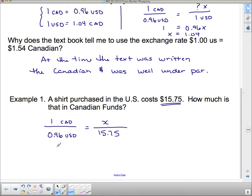And now, we cross multiply. So, 0.96 times X, 0.96X is going to equal this in the other direction. 1 times 15.75, which is just going to be 15.75.